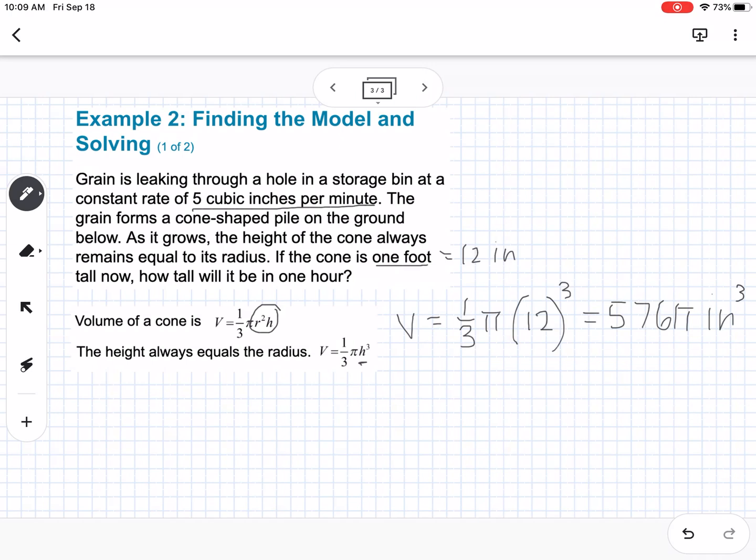Okay, and then, so we want to say 1 hour later. So that's going to be 60 minutes. So that's the other thing. So we want to do 1 hour. We have to convert into minutes. So it's 60 minutes times our rate, which is 5 cubic inches per minute. So 60 times 5 is going to give us 300, 300 cubic inches.